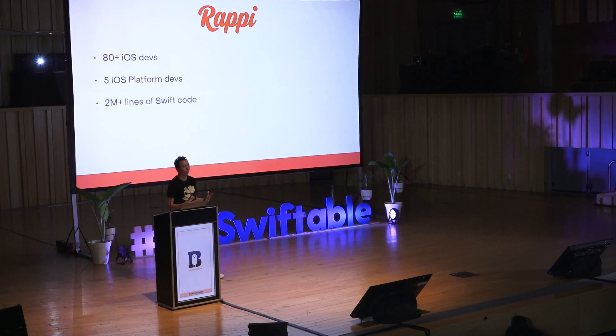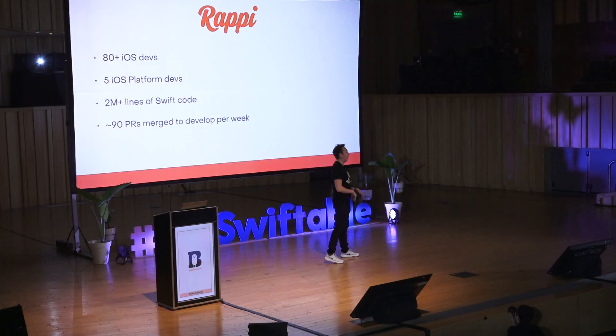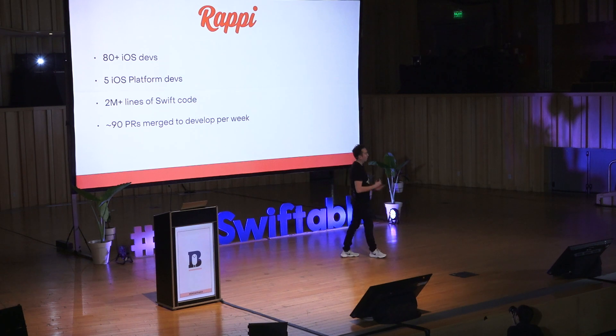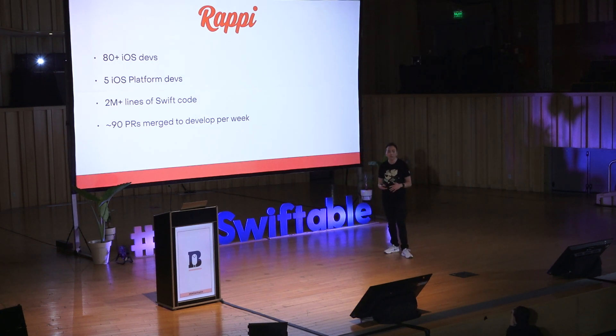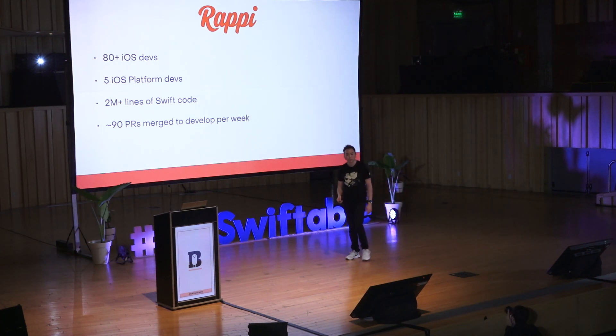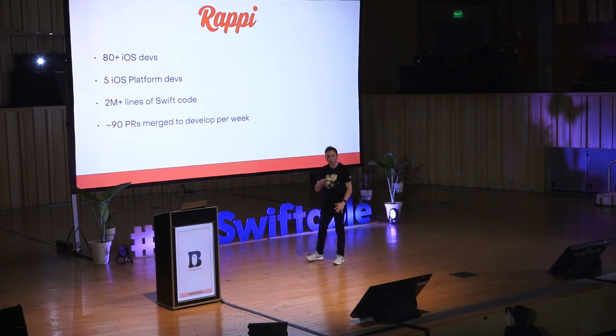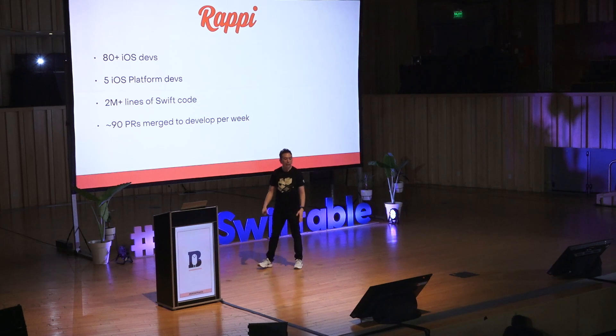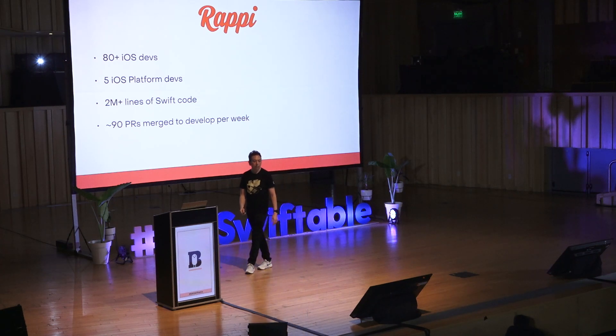The project has more than two million lines of Swift code, so it's a lot of code that we have to deal with. Just to give you a sense of how fast things move, there are around 90 PRs that are merged to the develop branch every week. So we have an overview of the scale of the company.